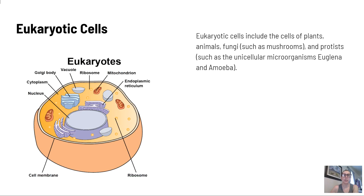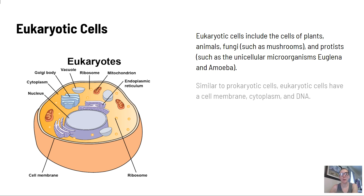Eukaryotic cells include the cells of plants, animals, fungi such as mushrooms, and protists such as unicellular microorganisms, Euglena, and amoebas. Similar to prokaryotic cells, eukaryotic cells have a cell membrane, cytoplasm, and DNA.